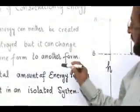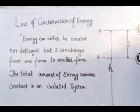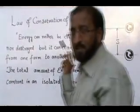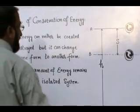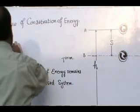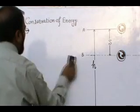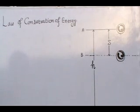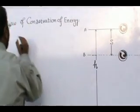Let us explain the law of conservation of energy with the help of a diagram. Consider a ball is present at point A. At this point its total energy can be calculated. The most important forms of energies are kinetic energy and potential energy. Now velocity at point A is zero.